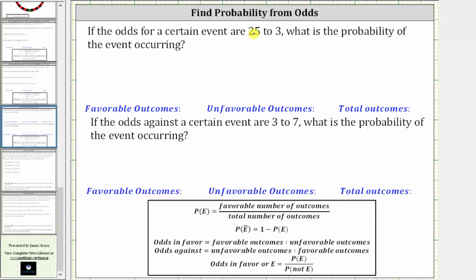Remember, the odds in favor of an event are equal to the ratio of the number of favorable outcomes to the number of unfavorable outcomes.